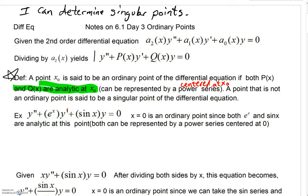Here's a definition. A point or x value, x sub 0, is said to be an ordinary point if both p of x and q of x are analytic at x naught or x sub 0. What it means to be analytic means that both p and q can be represented by a power series centered at x naught.